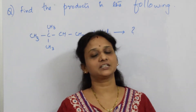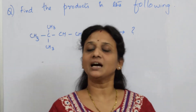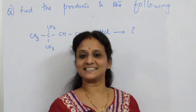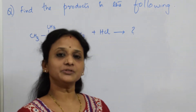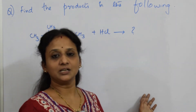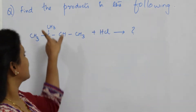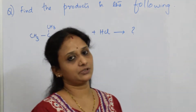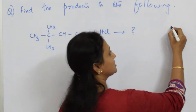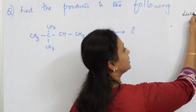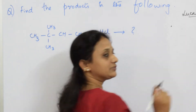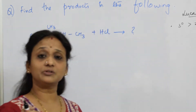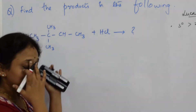Hello students. In my previous video I covered reactions based on Lucas reagent, and we made a table saying that tertiary alcohol is more preferred than secondary, and secondary more preferred than primary. Now we are going to see one more reaction related to Lucas reagent. Always remember: in Lucas reagent, tertiary is more preferred than secondary, more preferred than primary.